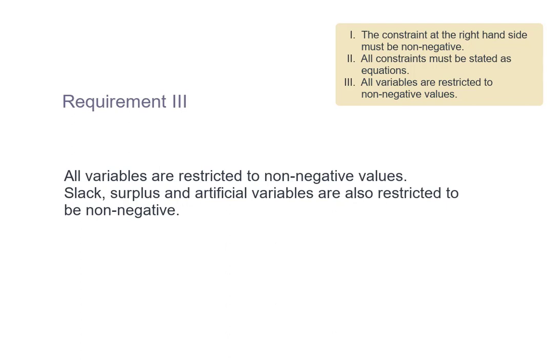In order to fulfill requirement 2, we need to make sure that all the constraints are written in equation form. In case they are not, we usually add some additional variable to the constraint so that the constraint can now be written in equation form. But we need to bear in mind that we also need to fulfill requirement 3 — that is, all variables should have non-negative values. This includes the decision variables and also additional variables added to the constraint in order to fulfill the standard form requirements.